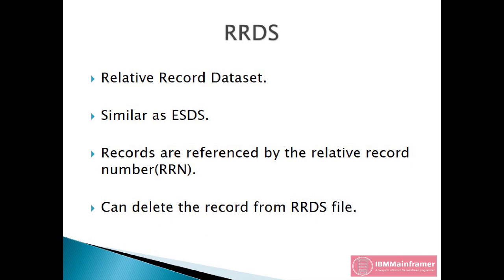RRDS, or Relative Record Dataset, is similar to an ESDS, except that the records are referenced by the relative record number, or RRN. This number is how many records down from the first record we are, similar to rows in a spreadsheet. And like a spreadsheet, we can have empty records, we can delete records, we can jump around, or we can go sequentially.